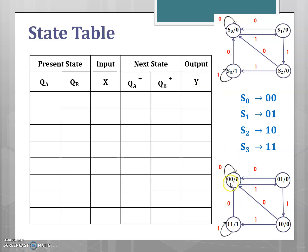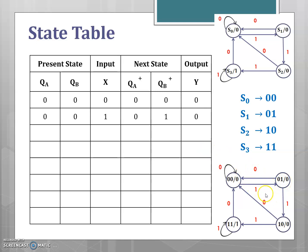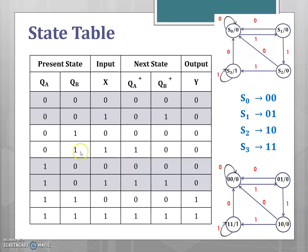Starting with the initial state 00, two inputs are possible: 0 and 1. For input 0, the circuit remains in state 00 with output 0. For input 1, the circuit goes to state 01 with output 0. The same process is repeated for the remaining states 01, 10, and 11 to complete the state table.